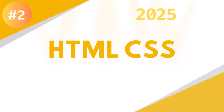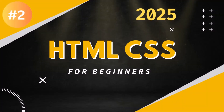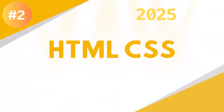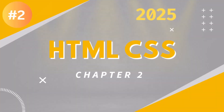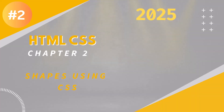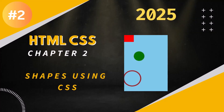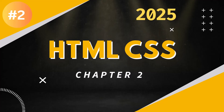Hi everyone, this is Sriraj and welcome to Chapter 2 of our HTML CSS for Beginners series. In this chapter, we will be discussing more about CSS. I'll be showing how to design some shapes like square, circle, and ring using HTML and CSS. So we'll be diving deeper into CSS.